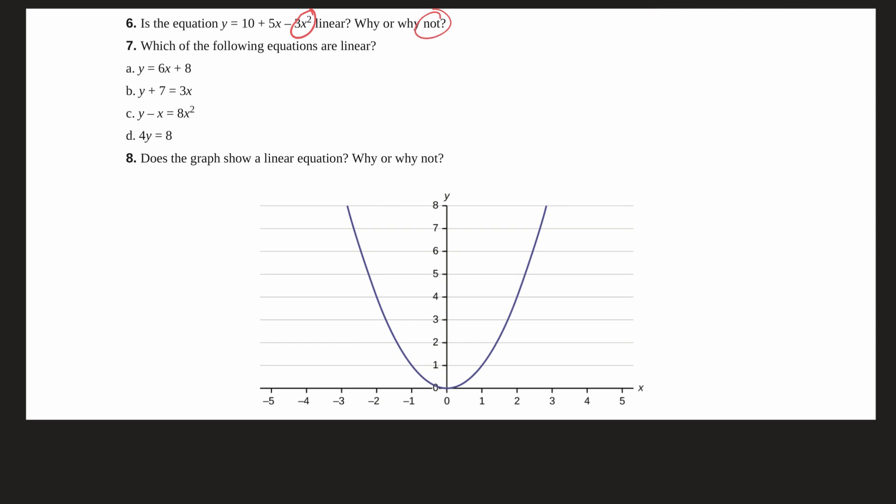So which of the following equations based on that are linear? Well, if we look at our equations here and follow our rule, we can see that y equals 6x plus 8 doesn't have any squared terms or anything in there. So this is linear.